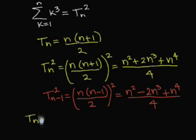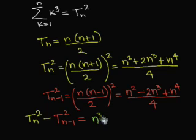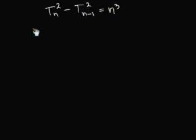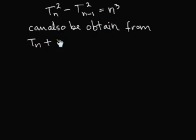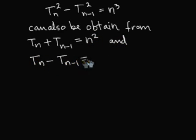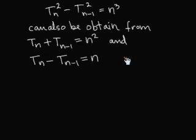Now that means that the following relation is true: t sub n squared minus t sub (n minus 1) squared is equal to n to the cube. We could have also arrived at this relation by multiplying the relations t sub n plus t sub (n minus 1) equal n squared, and t sub n minus t sub (n minus 1) equal n, which we found in a prior lecture. We have now obtained a recursive relation between the squares of two consecutive triangular numbers and the cube of a number.